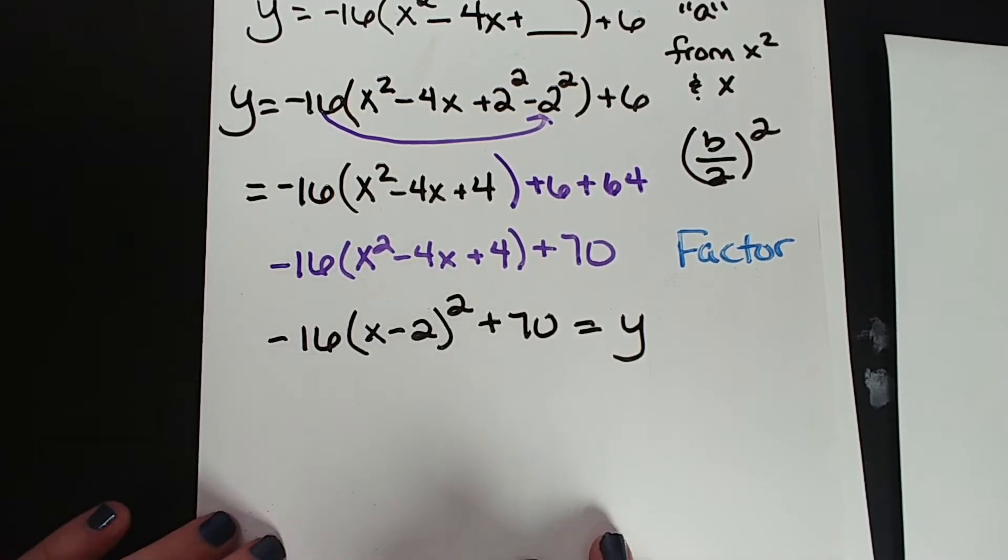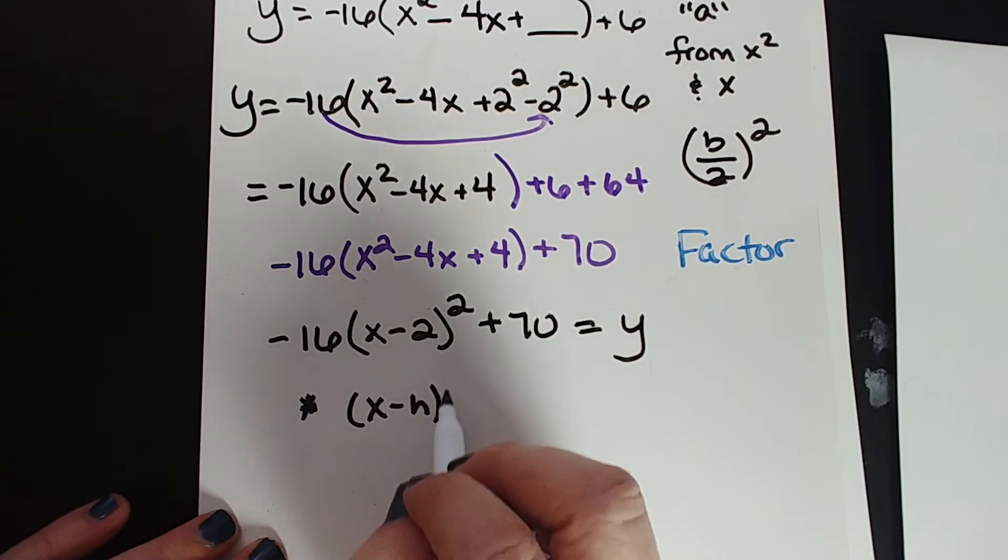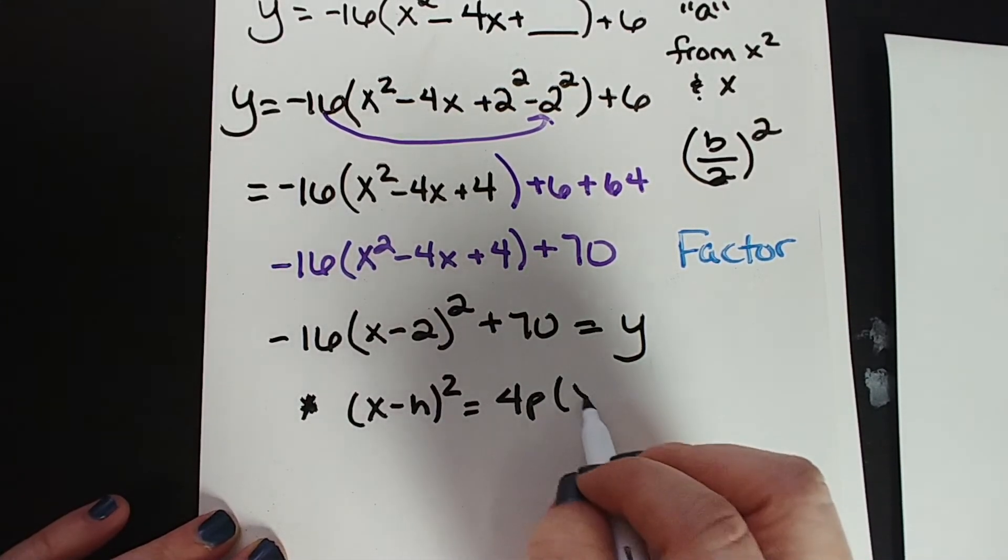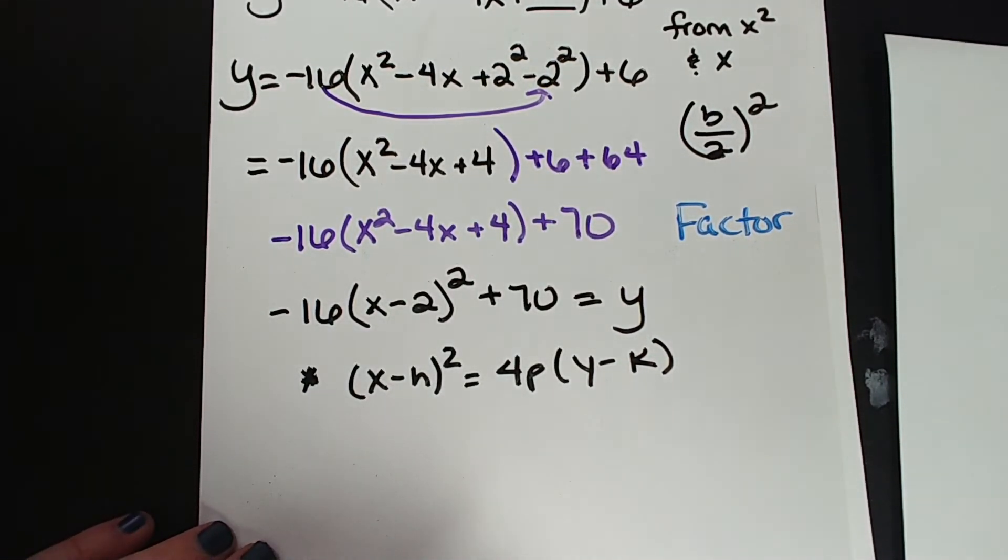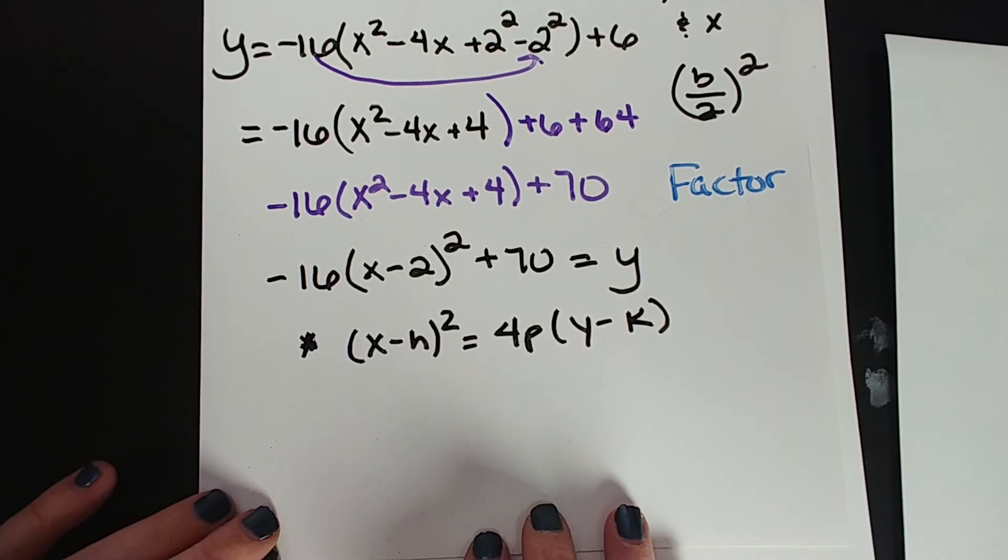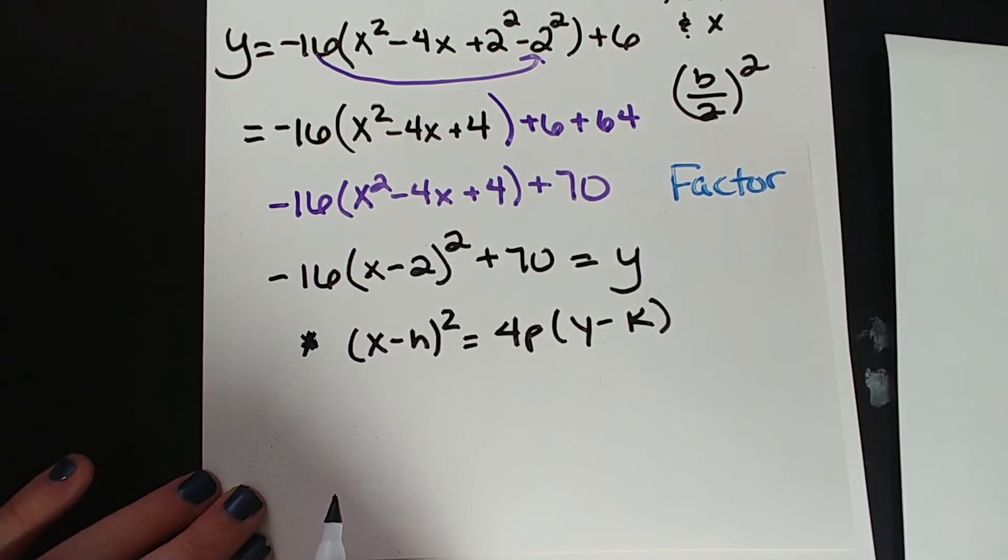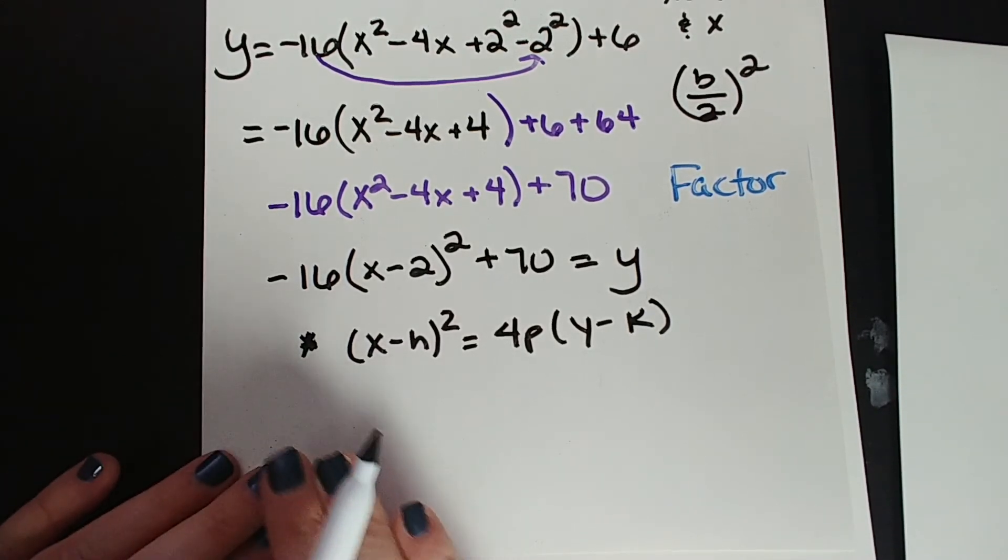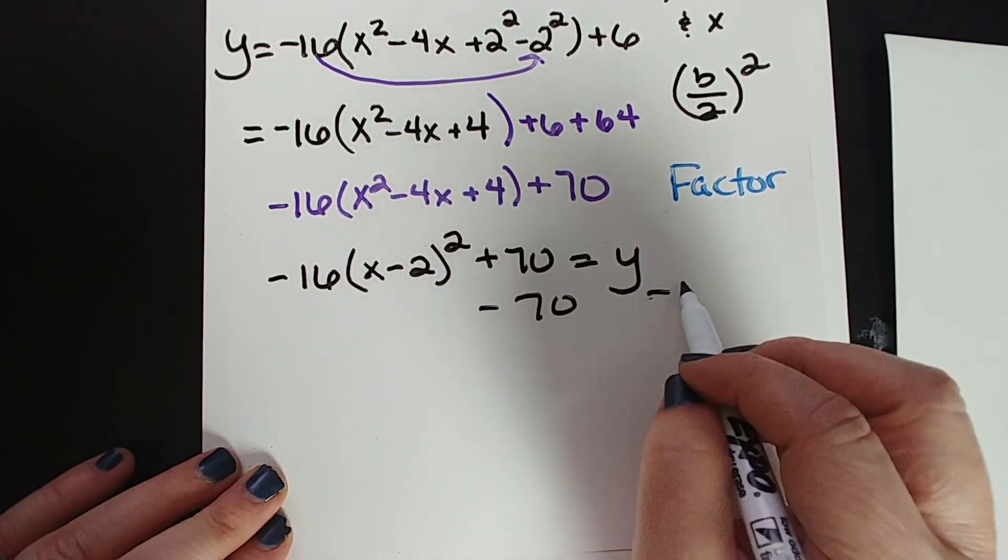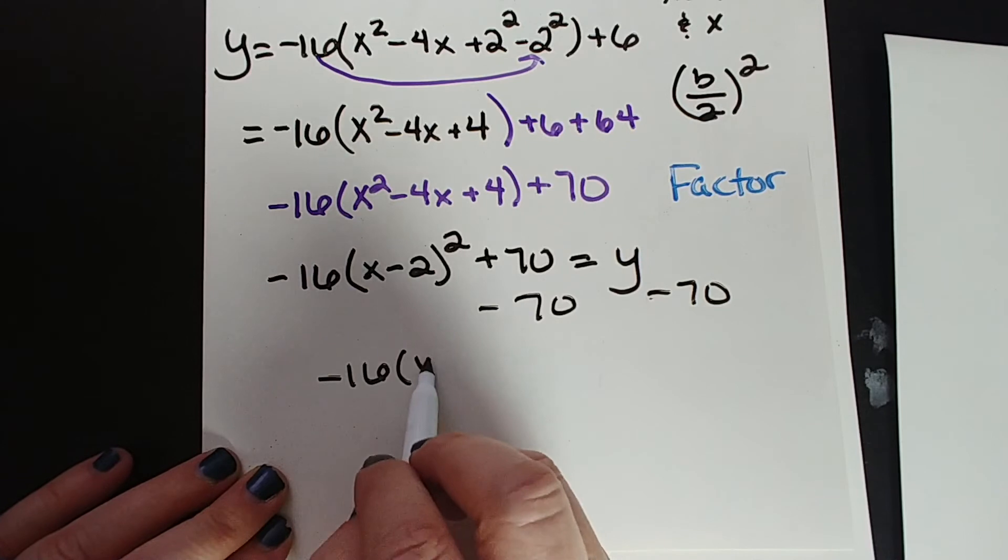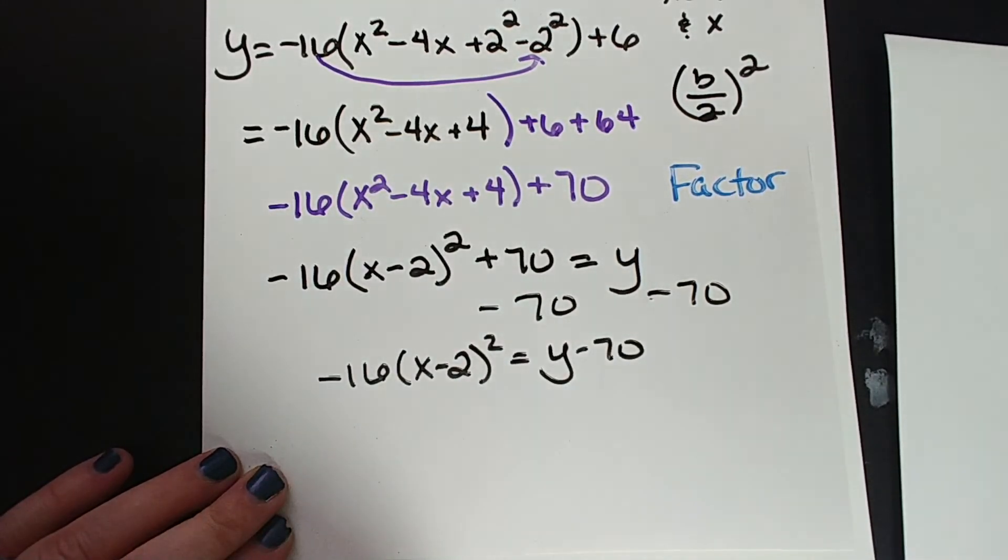So we have that. We still have our plus 70. Now I'm going to move my equals y to the other side. I know that I lost it. I also know that my standard form, remember our standard form says (x-h)² equals 4p(y-k). That's why I moved my y over there. I know I want everything over there anyway. So let's clean this up. Negative 16, x minus 2 squared plus 70. Let's move over that 70. So minus 70, minus 70. So negative 16, x minus 2 squared equals y minus 70.